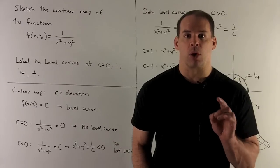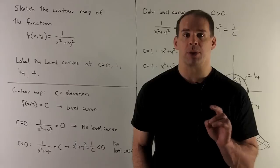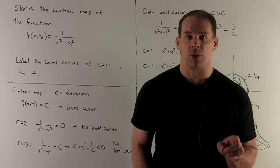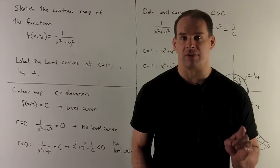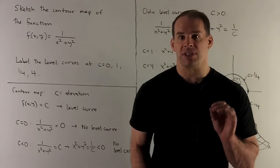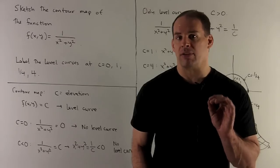But x² and y² - when I take a number and square it, I get zero or a positive number. So x² + y² is always zero or positive, can never be negative. So if c is negative, we'll have no level curves for those values either.